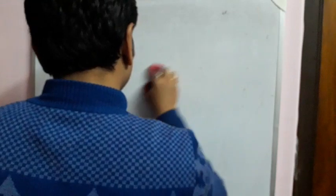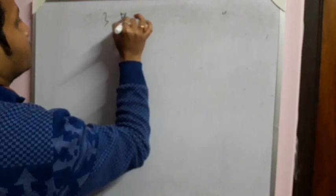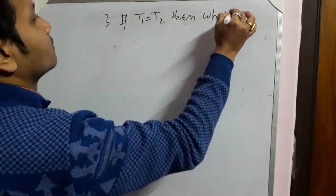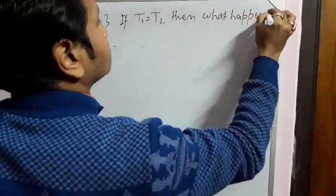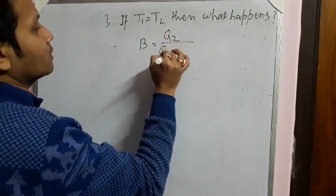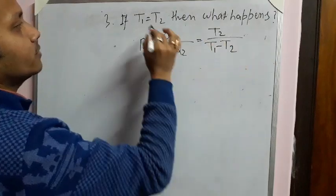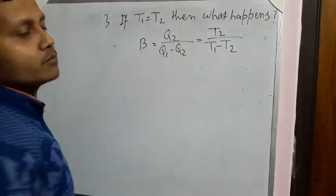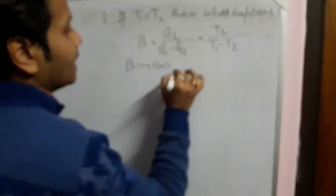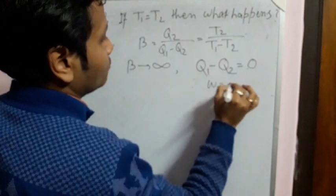Another conceptual question that arises is: what happens if T1 equals T2? We know the formula of efficiency is Q2 upon Q1 minus Q2, or T2 upon T1 minus T2. If T1 equals T2, then beta becomes infinite. If beta is infinite, the term Q1 minus Q2 equals zero, which means W equals zero.